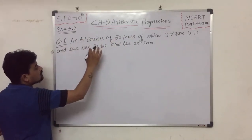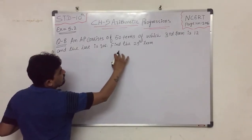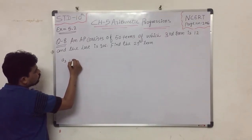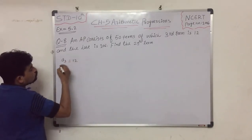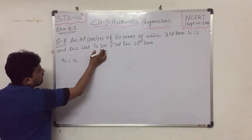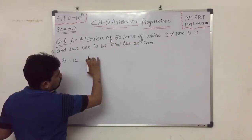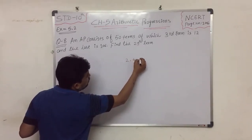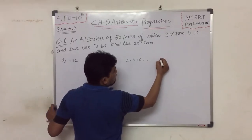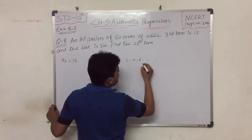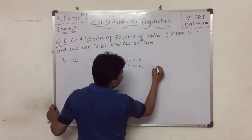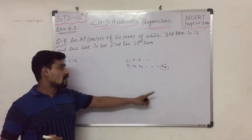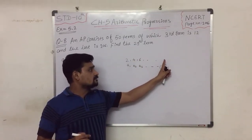We have a total AP which is 50 terms. The 3rd term is 12. The last term, which means there are 50 terms total, and the last term is the 50th term, which is equal to 106.